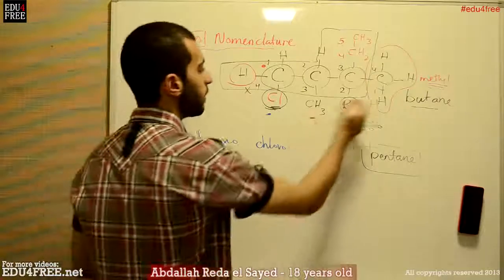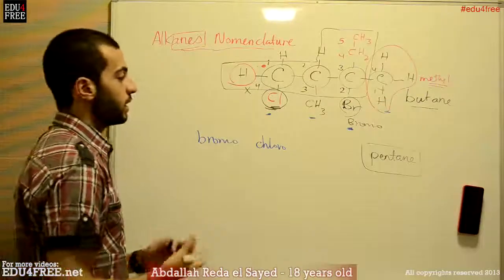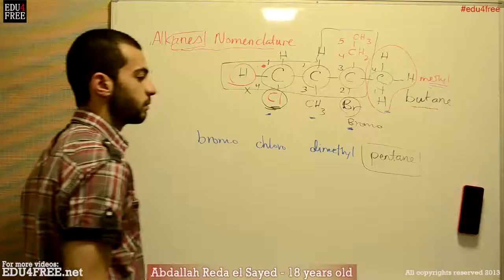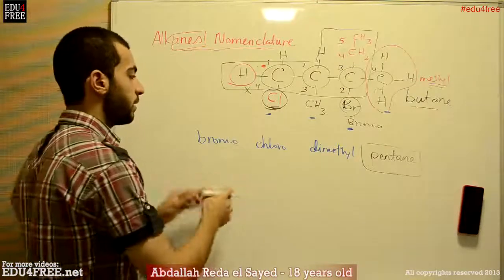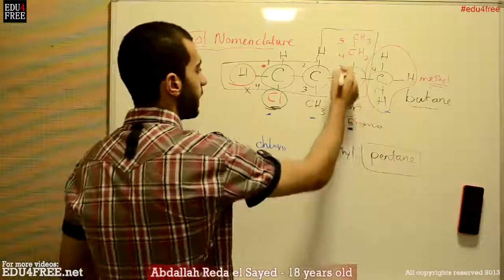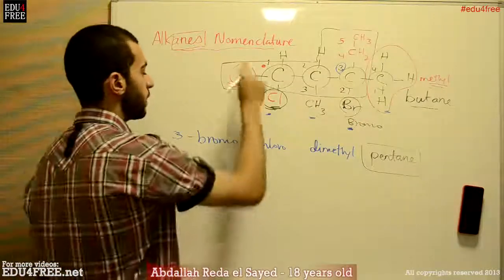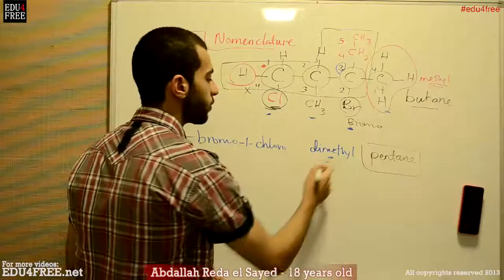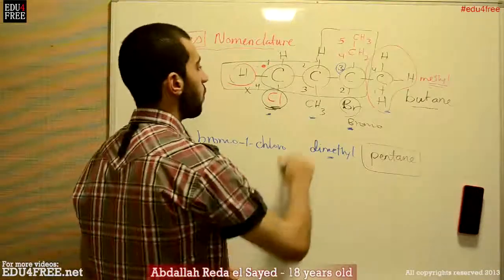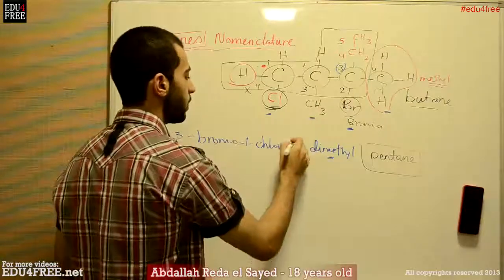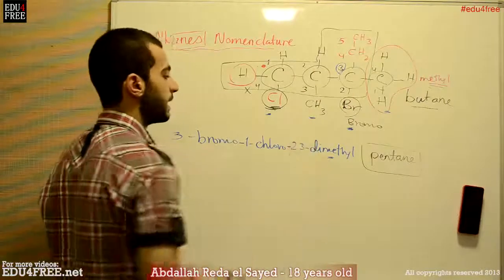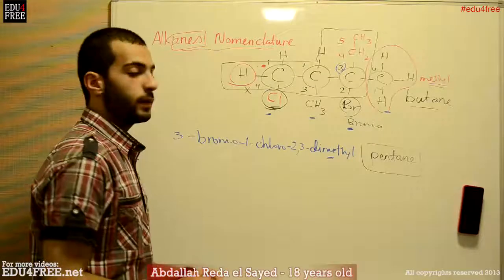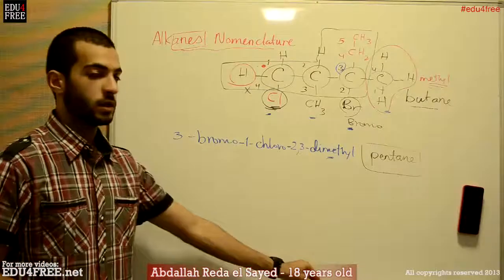We have 2 methyl substituents, so we type 'dimethyl.' The bromo is found at the third carbon, chloro is found on the first carbon, and we have 2 methyl groups — one on the second carbon and one on the third. So we type 2,3-dimethyl. Putting it all together: 1-bromo-3-chloro-2,3-dimethylpentane. This is the nomenclature of alkanes. I hope it was clear for you.